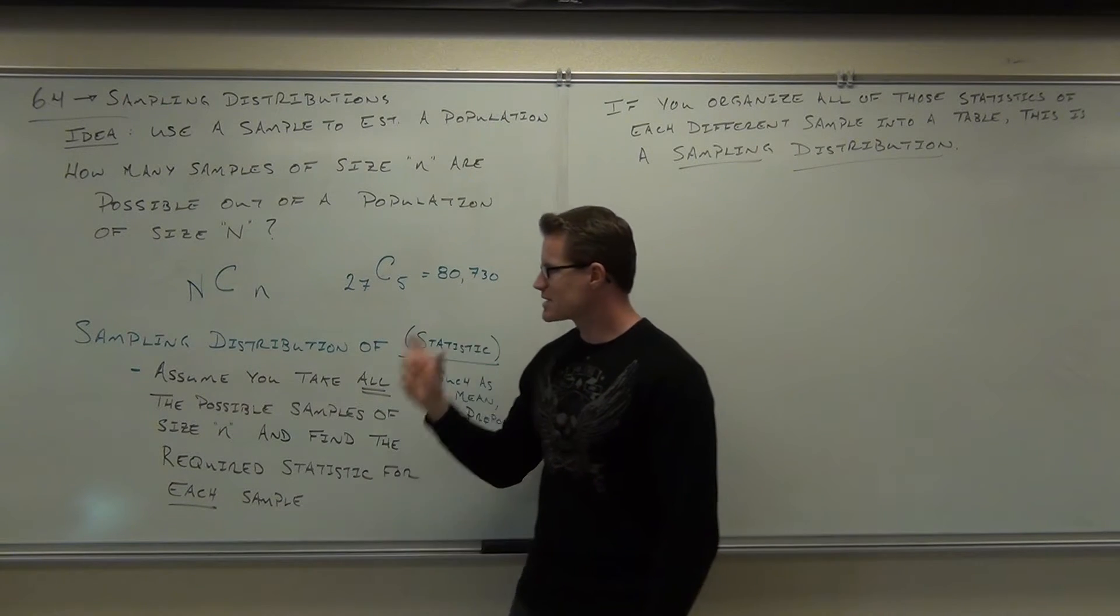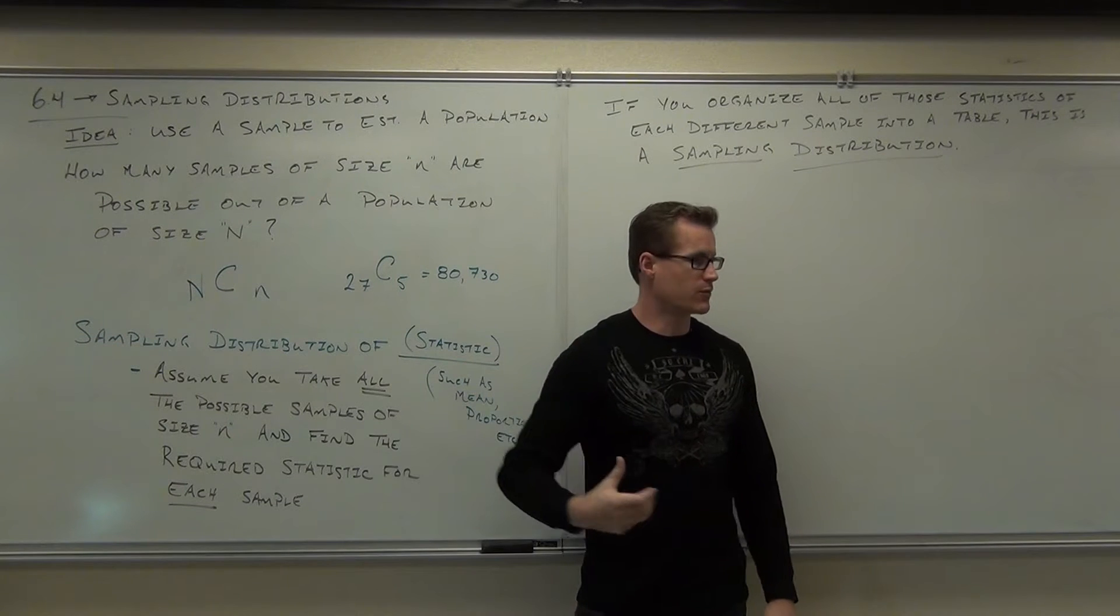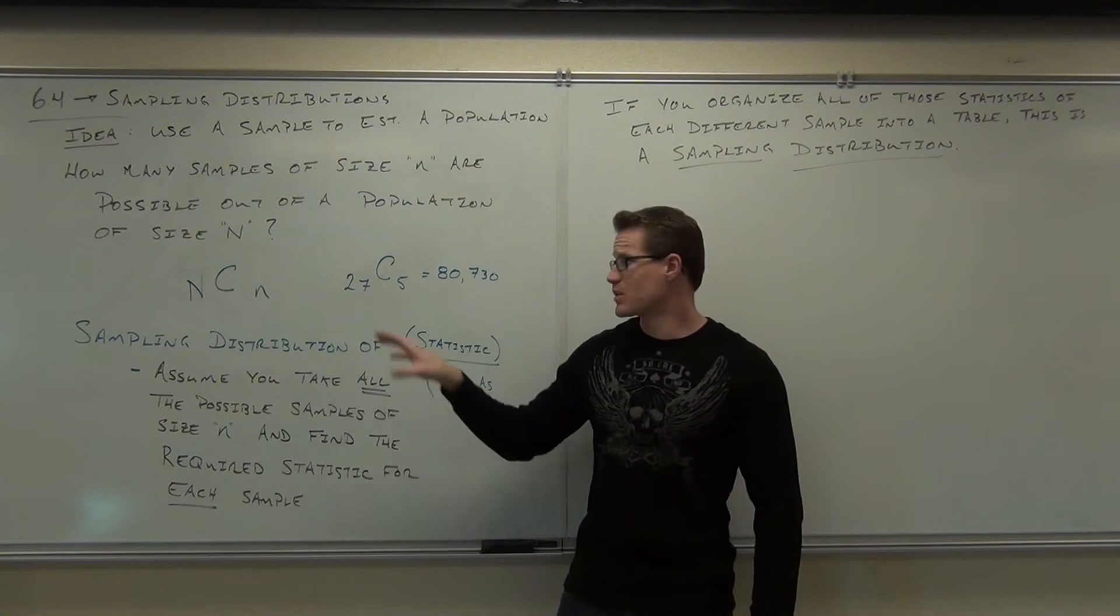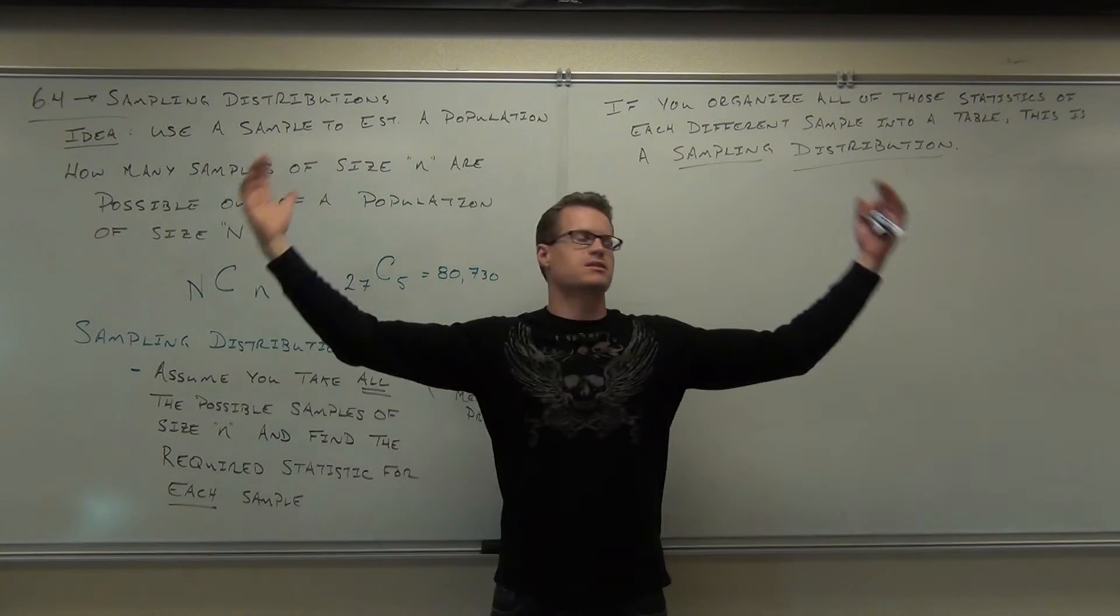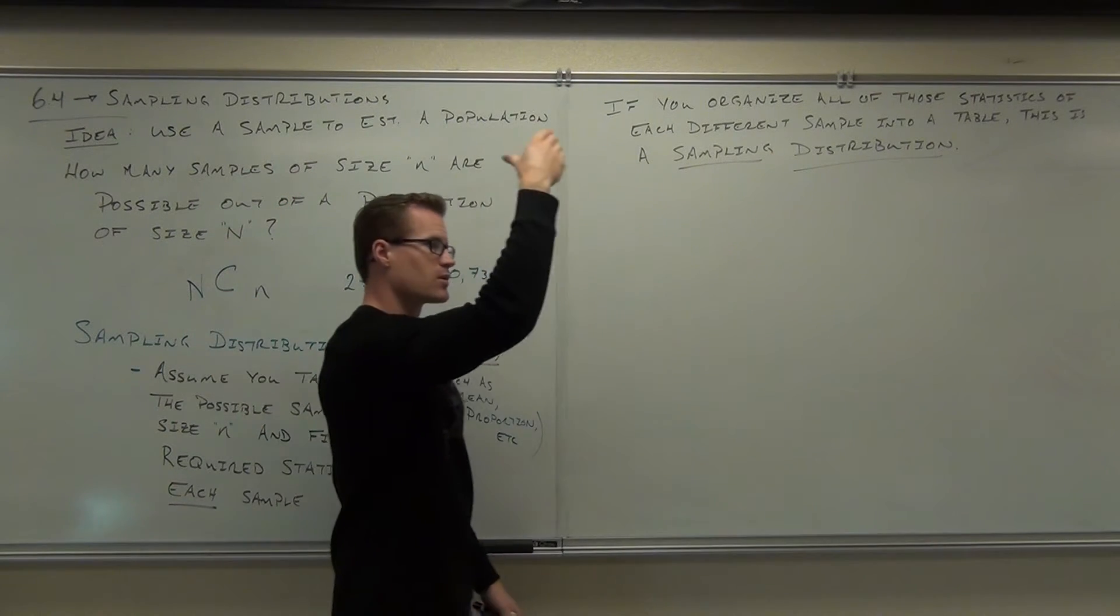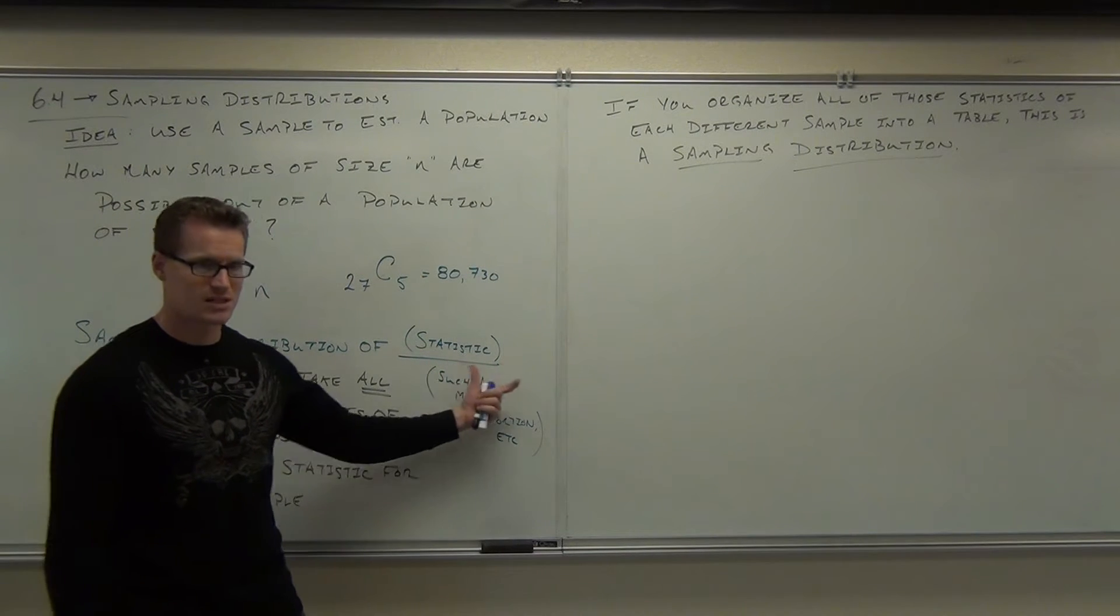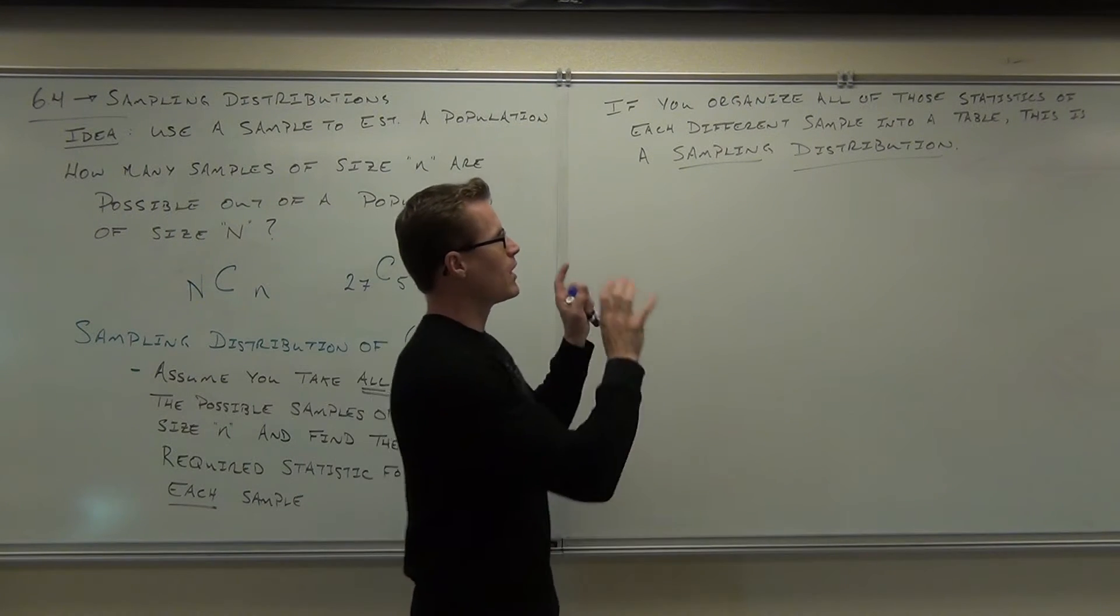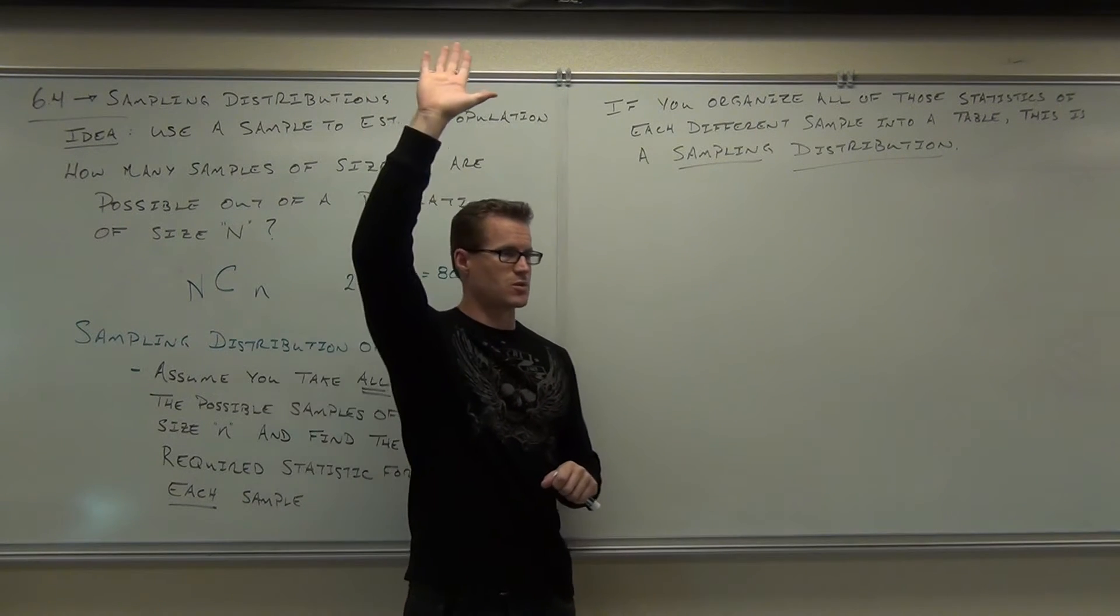We take the statistic for every single one of those samples, all 80,730 in this case. This is a relatively small population and sample size. You increase these, you get massive numbers. You organize every one of those statistics into a table, and that's called a sampling distribution.